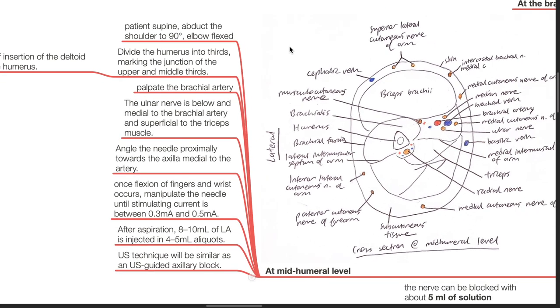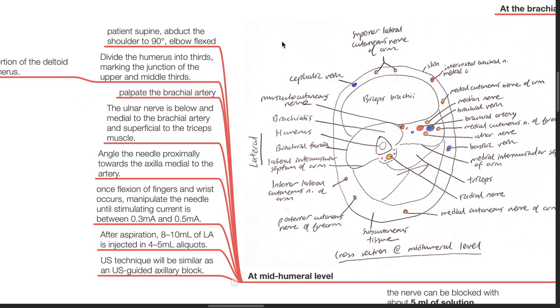Palpate the brachial artery. The ulnar nerve is below and medial to the brachial artery and superficial to the triceps. Angle the needle proximally towards the axilla medial to the artery. Once flexion of fingers and wrist occurs, manipulate the needle until the stimulating current is between 0.3 and 0.5 milliamps. After aspiration, 8 to 10 mL of local anesthetic is injected in 4 to 5 mL aliquots.